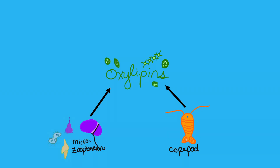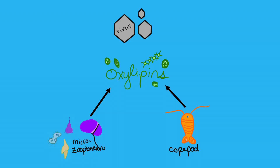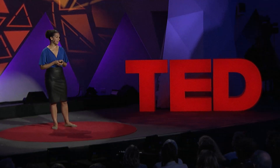But death by a grazer is not the only way that oxylipins get produced. Just like you and me, diatoms can be infected by viruses, and the viruses hijack the diatoms' molecular machinery to make copies of themselves. Whenever the new viruses burst through the cell membrane, we get oxylipin production. Diatoms can also die due to running out of nutrients or old age, which for a phytoplankton is like a week. Both of those also promote oxylipin production.